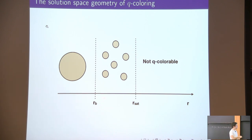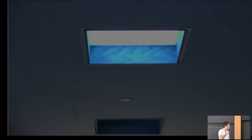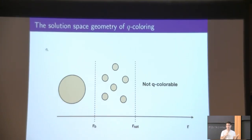But right after this threshold, this giant ball shatters into pieces that are very far from each other in Hamming distance. Moreover, if you want to go from one piece to another, from one cluster to another cluster, then you should go through what we call energy barriers, which are basically configurations that violate many constraints. And this seems to make it hard for our algorithms to navigate this kind of space.